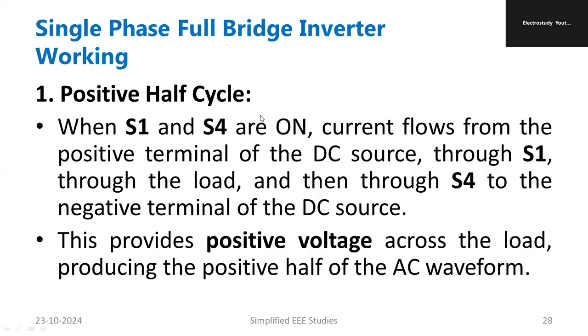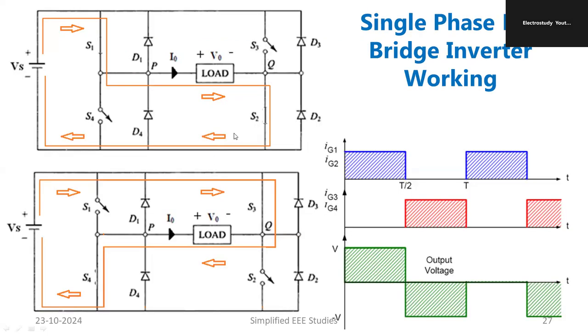For clarification, I have explained during positive half cycle, what is going to happen. Positive half cycle, S1 and S2 will be on. During negative half cycle, S3 and S4 will be turned on. So these sequences, please go through that.